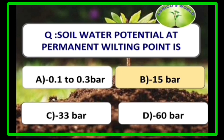Our first question: soil water potential at permanent wilting point is minus 15 bars. At permanent wilting point, the plant recovers if irrigation is given. At ultimate wilting point, i.e. at minus 60 bars, the plant will not recover even if irrigation is given.